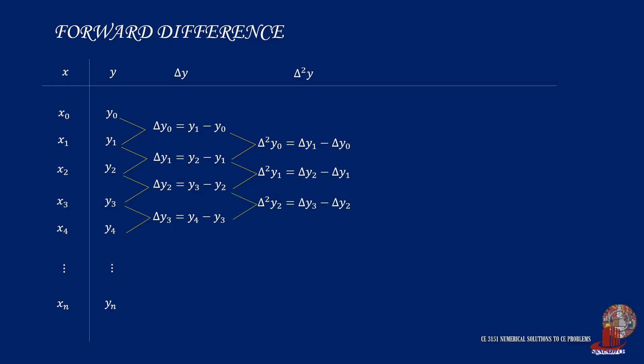And then, if the data set still shows different values, we continue to the third forward difference, following the same procedure of taking the difference of the two preceding values, like delta cube of Y0 is delta squared Y1 minus delta squared Y0, and so on.